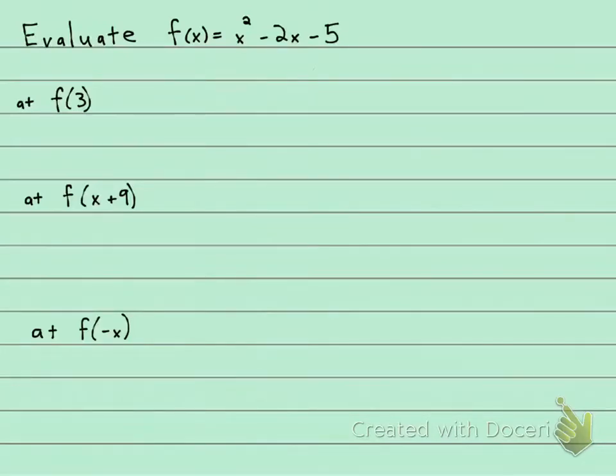Evaluate f of x equals x squared minus 2x minus 5 at these three. Now when you see the letter f, you want to think f for function. What we're doing here is if they give you an x value, you are going to plug it in for every x you see on the right hand side here.